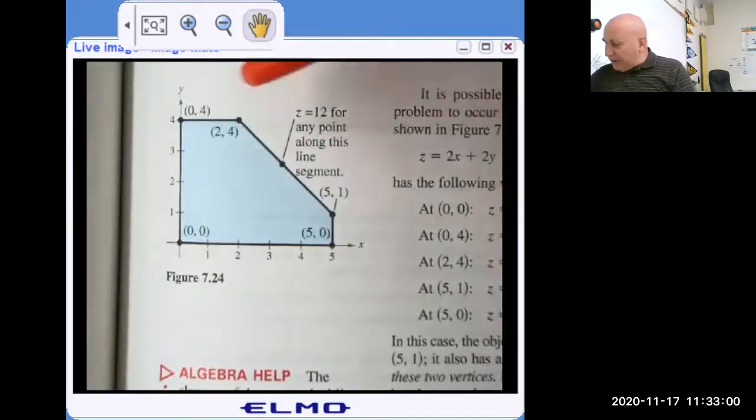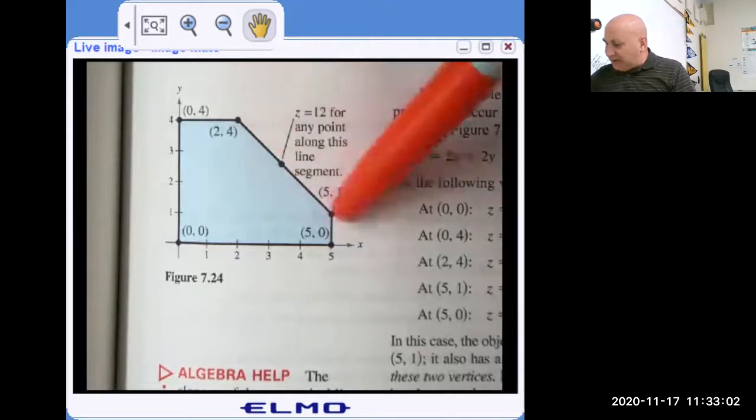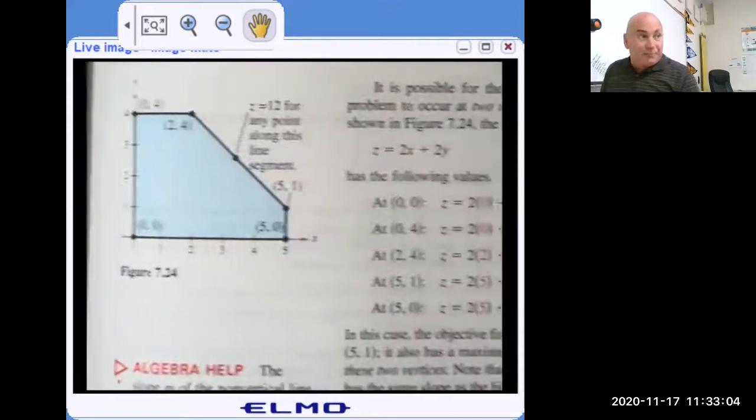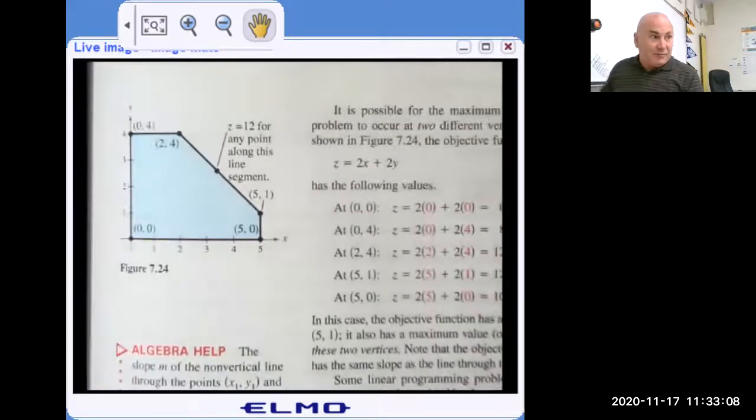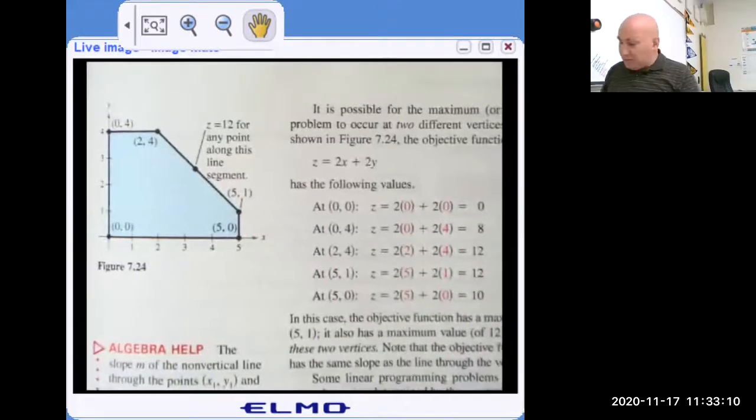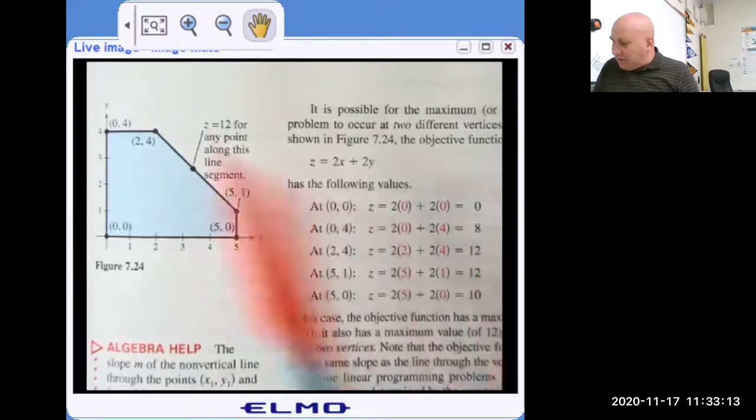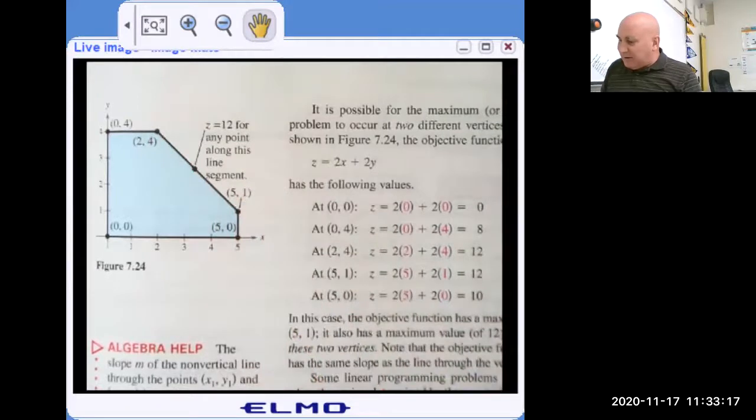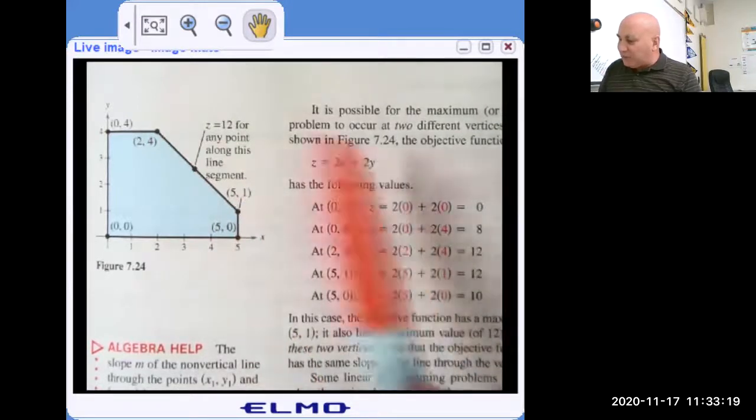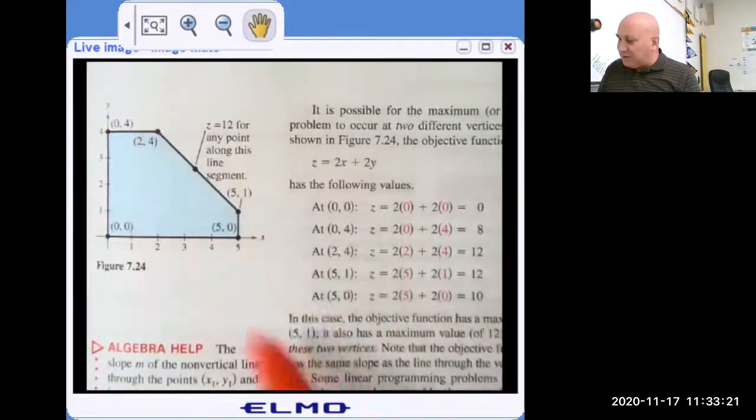Now again, anywhere along this line in this particular problem, you're going to get a maximum of 12. So it could be here, could be here, actually anywhere along that line, because again, your objective function will be parallel to that.